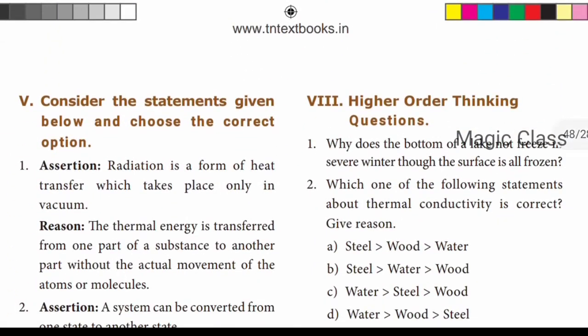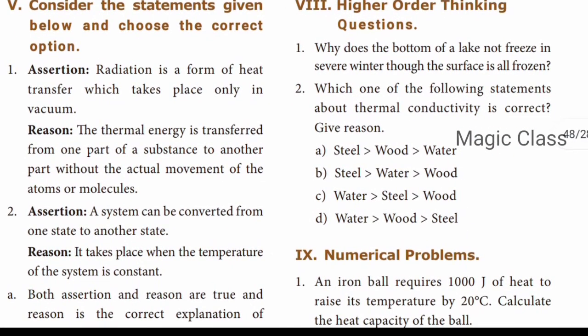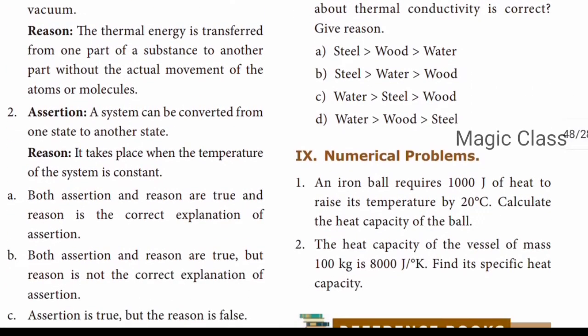Next is assertion and reason. Consider the statements given below and choose the correct option. Assertion: Radiation is the form of heat transfer which takes place only in vacuum. Reason: Thermal energy is transferred from one part of the substance to another part without the actual movement of atoms or molecules. The answer is option B - assertion is correct, reason is correct, but the reason is not the correct explanation of the assertion.